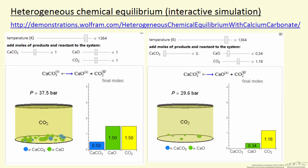On the left, showing equilibrium. An important aspect, this is a constant volume container, so the pressure changes as the temperature changes. Equilibrium pressure, in this case, is 37.5 bar. And we have 1.5 moles of CO2 in this container.